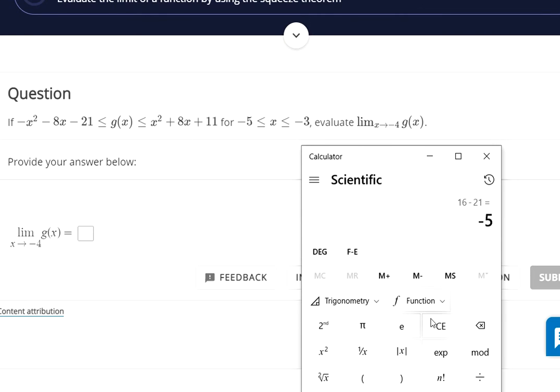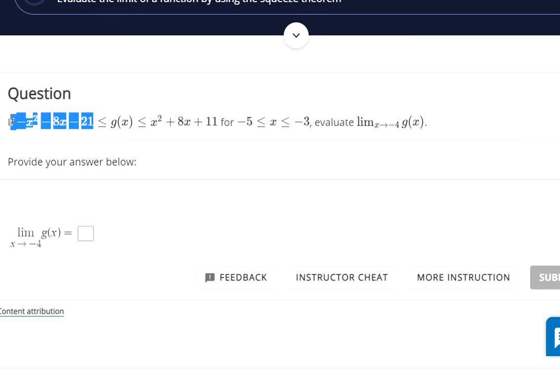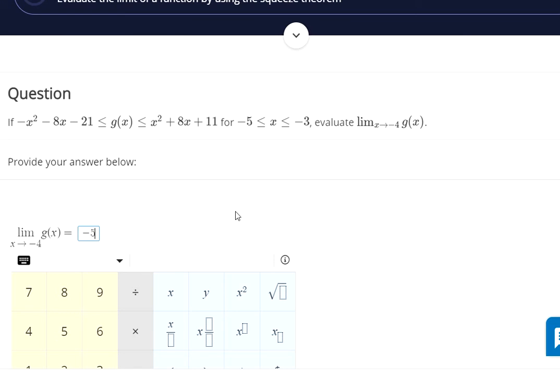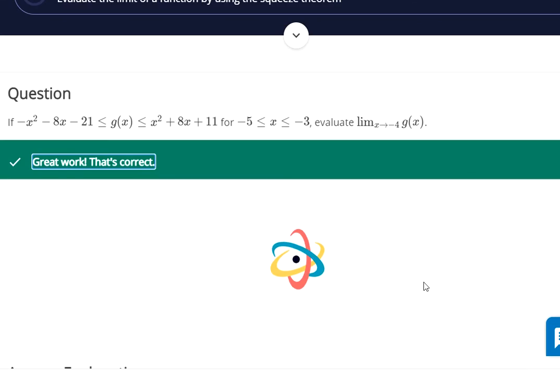Doing the same thing over here: that's sixteen, eight times negative four is negative thirty-two, plus eleven gives us negative five. So the limit on the left and the limit on the right are the same—they're both negative five. By the squeeze theorem, even though we don't have any idea what g of x is, we know its limit is going to be negative five.